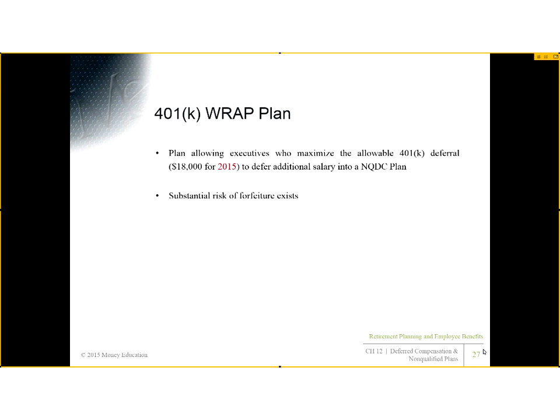The 401k RAP plan is a supplemental plan that allows an executive who is already maximizing the 401k deferral — $18,000 — to defer additional salary into a non-qualified deferred compensation plan. It's wrapped with the 401k, a combo of a non-qualified plan combined with a 401k. A substantial risk of forfeiture exists on the non-qualified side, not on the 401k side. That covers this section; the next section will get into stock option plans.